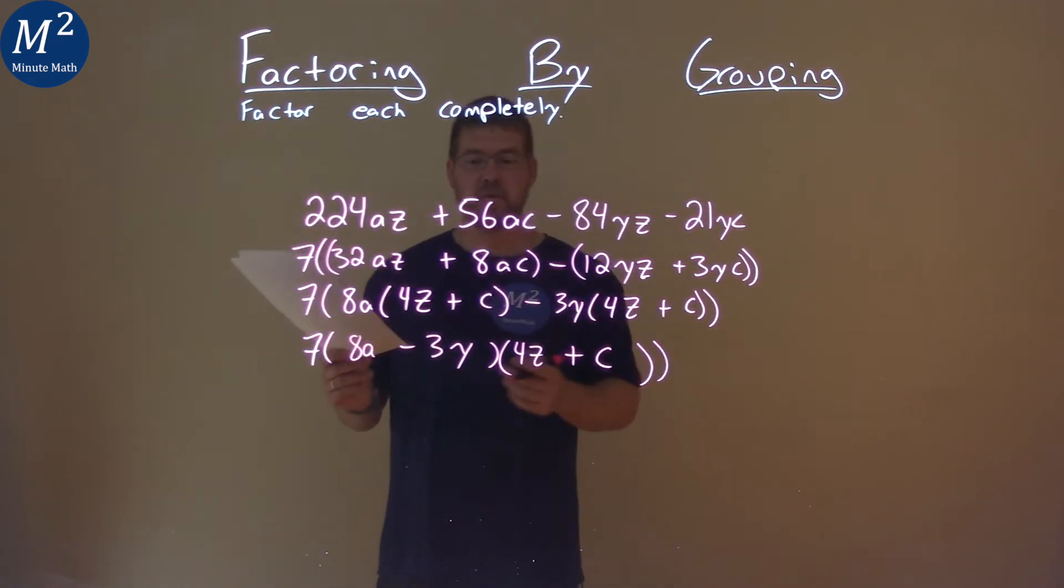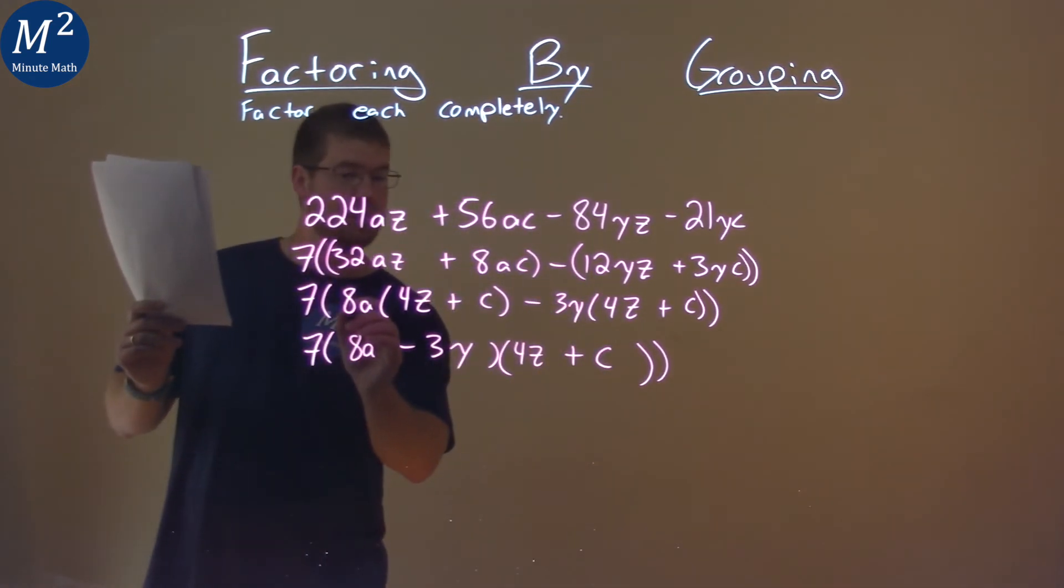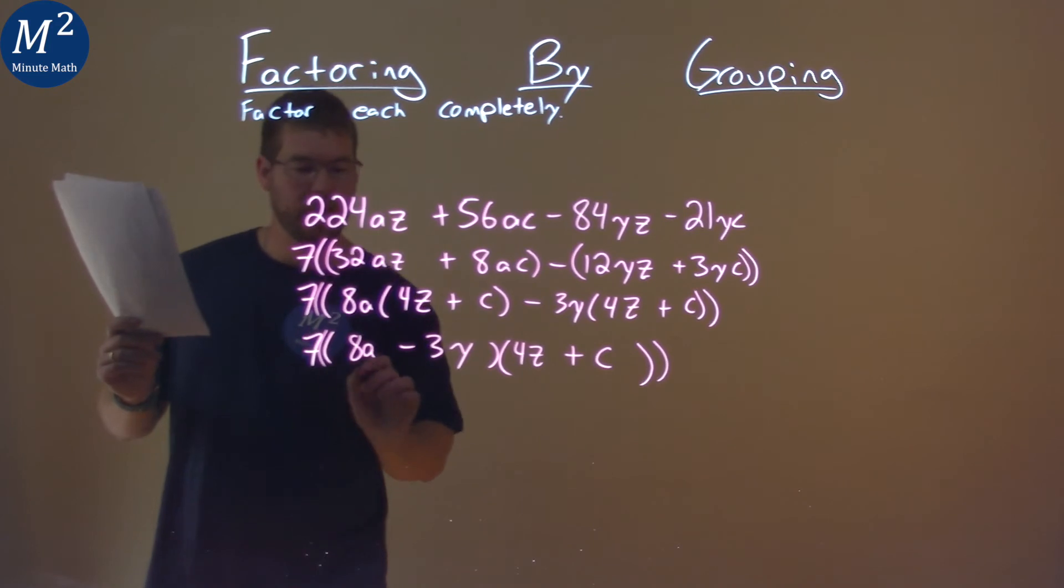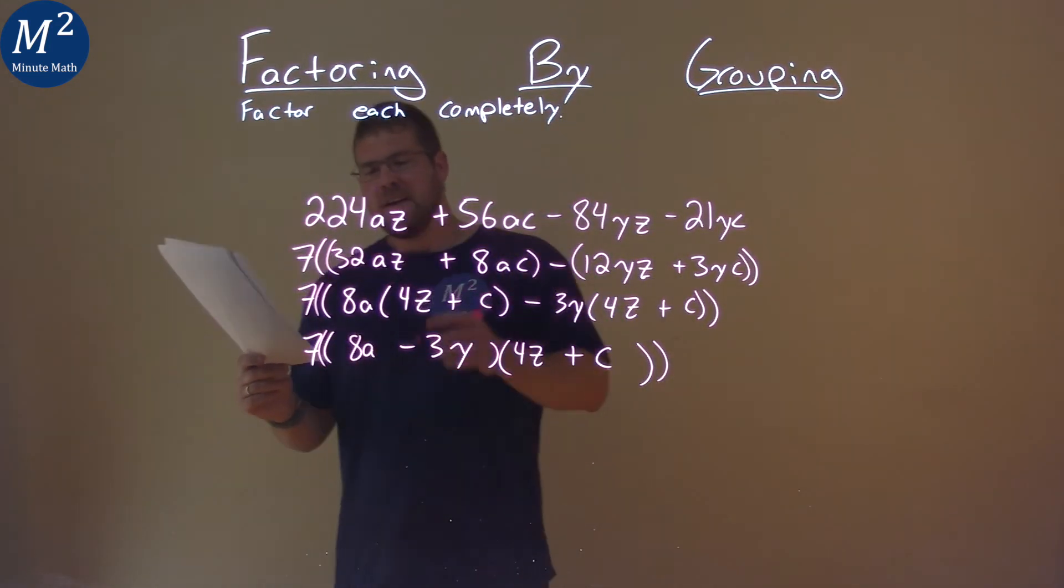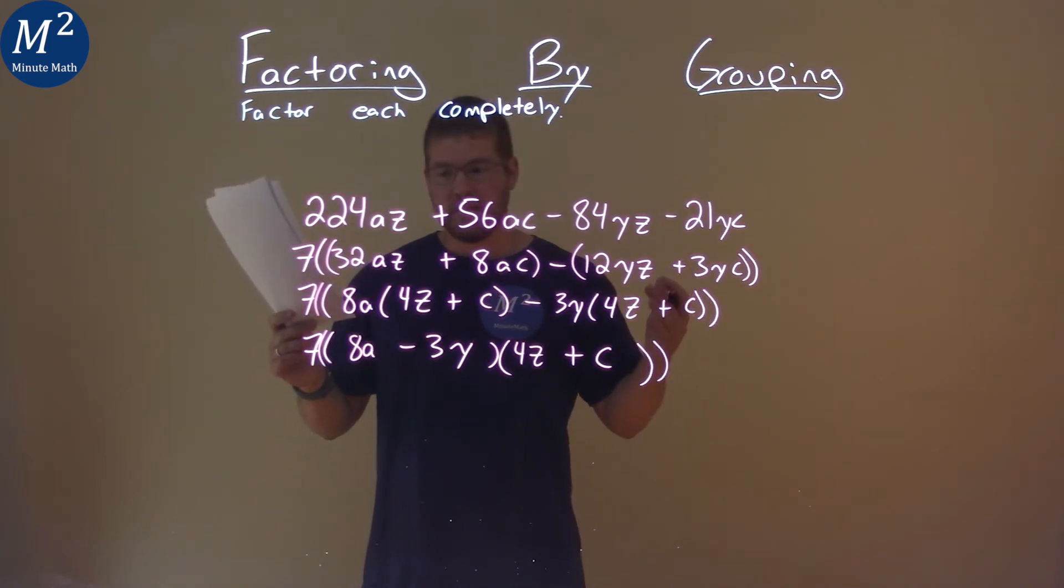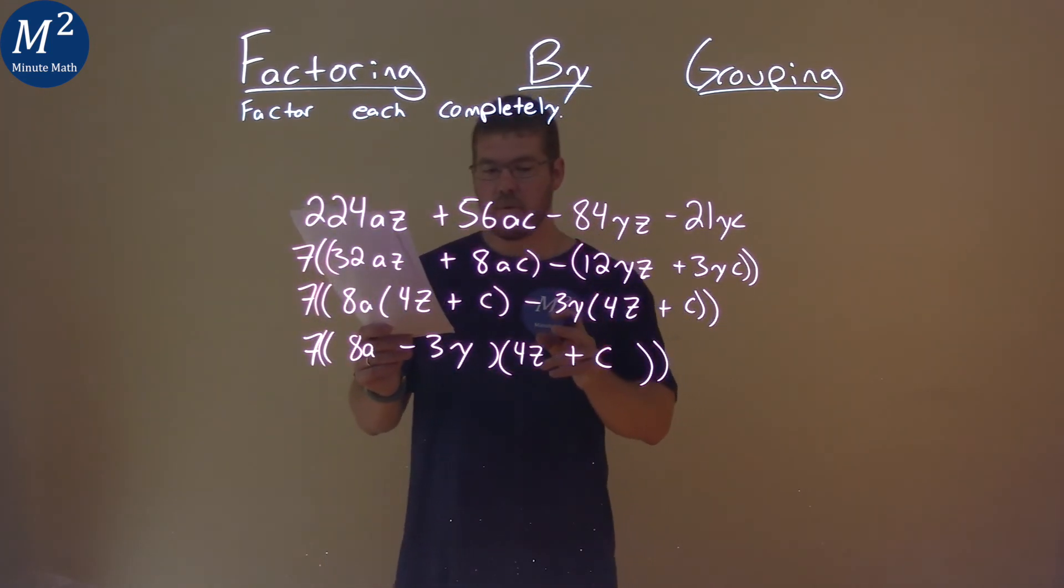And so my final answer now is 7 times... Oh, I'm going to put another parenthesis here. Did I forget that? I did. Right here. All right. Here we go. Keeping it all nice and neat. Don't forget it. 7 times in big parentheses, another parenthesis, 8A minus 3Y times 4Z plus C. And that is our final answer.